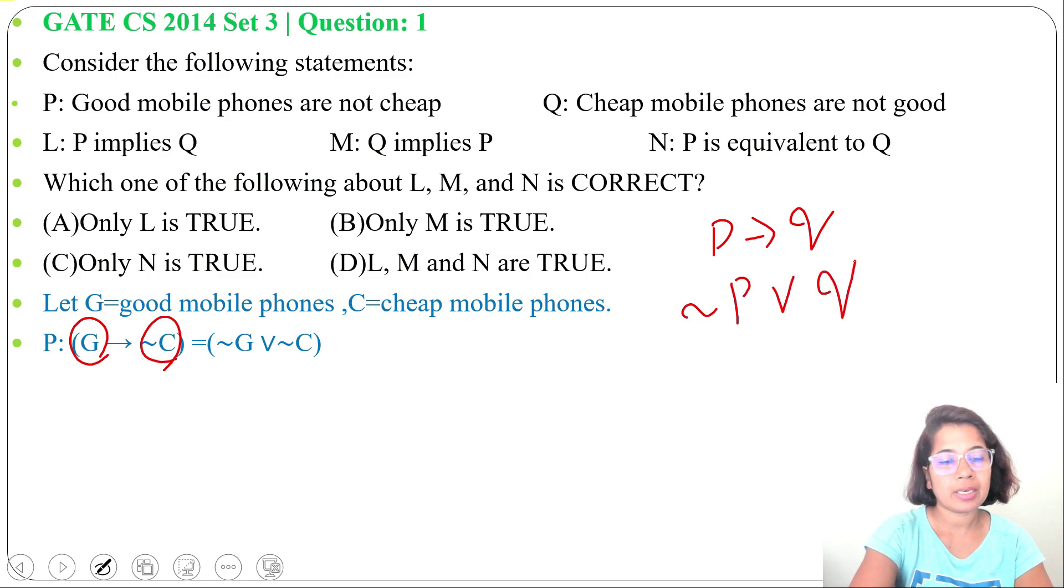Next, Q: cheap mobile phones are not good, so C implies negation of G. That we can write as negation of C or negation of G.